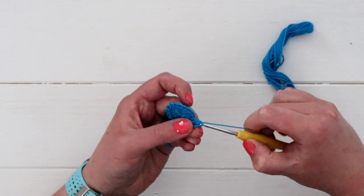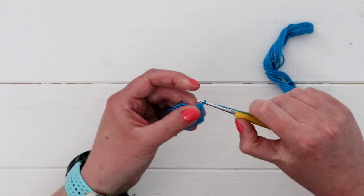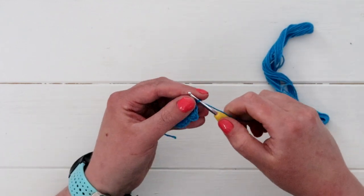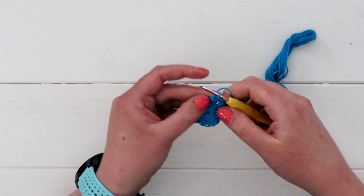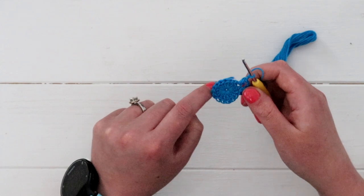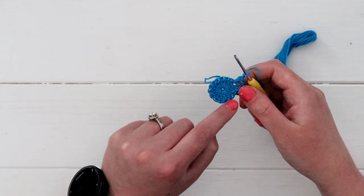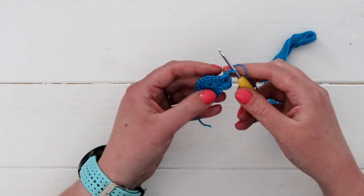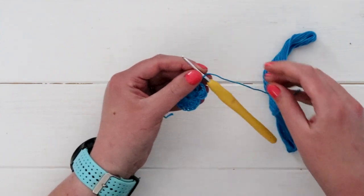And sometimes the embroidery floss kind of splits, and if that happens, you just need to kind of wiggle the hook out. And then we chain two to finish off that puff stitch. And you will continue to puff stitch all the way around the edge. So you should have 16 total puff stitches. So go ahead and pause the video and work on your puff stitches for this last round.